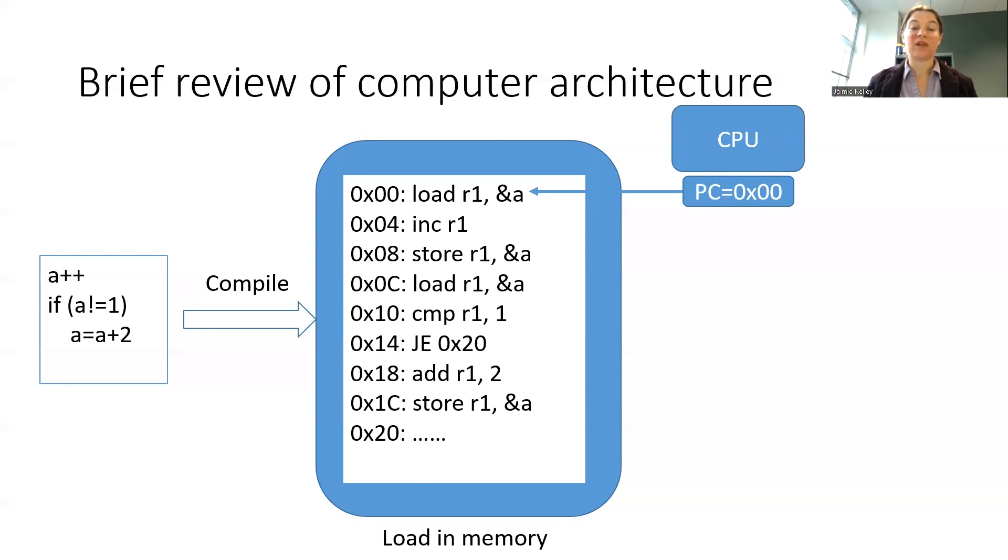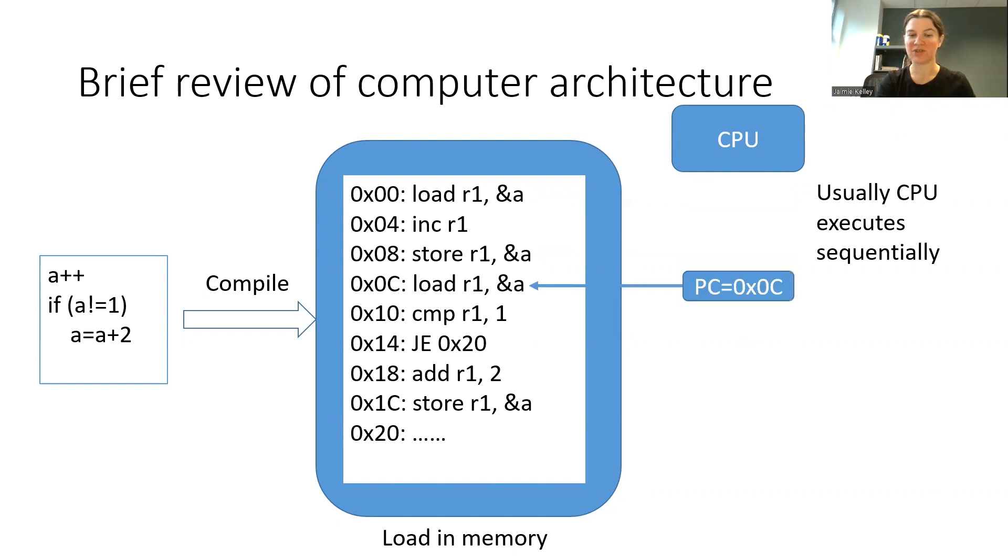Typically the CPU is going to execute sequentially, but sometimes gets to a point where it reaches a jump instruction. Jump instructions are special because one of the things they do is change the order in which the code executes.